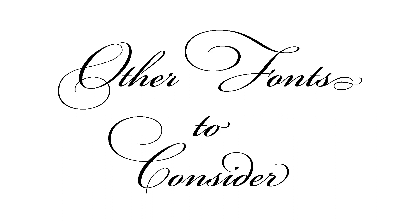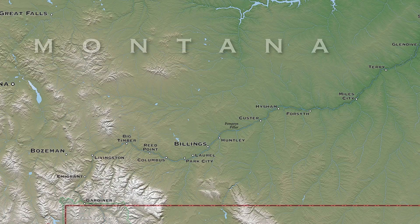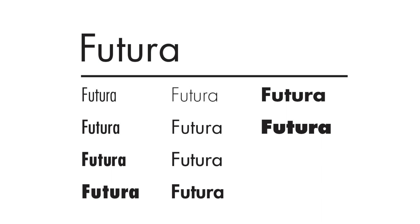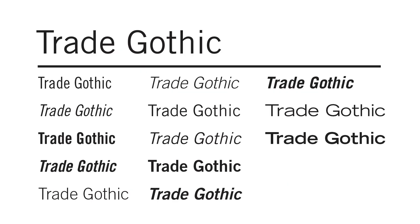Other fonts to consider. Copperplate can suggest a rugged, outdoorsy feel — it's useless for small labels and it's not condensed, but it can work well for names of states or countries, especially if spaced appropriately. Futura can be a good choice if you need a very modern Bauhaus type look. Avenir is another modern style typeface that's a little more readable than Futura and a bit less German. Trade Gothic is a useful typeface that includes condensed and extended versions.